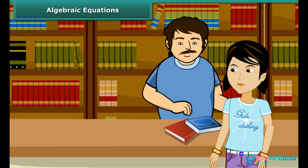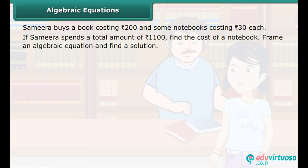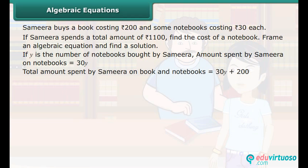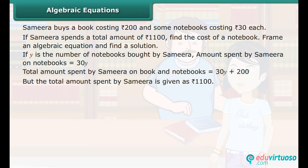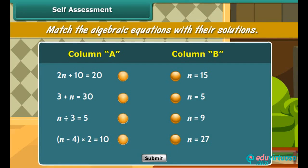Samira buys a book costing 200 rupees and some notebooks costing 30 rupees each. If Samira spends a total of 1100 rupees, find the number of notebooks. If Y is the number of notebooks, total amount equals 30Y plus 200. Since total spent is 1100 rupees, 30Y plus 200 equals 1100. Match the algebraic equations with their solutions.